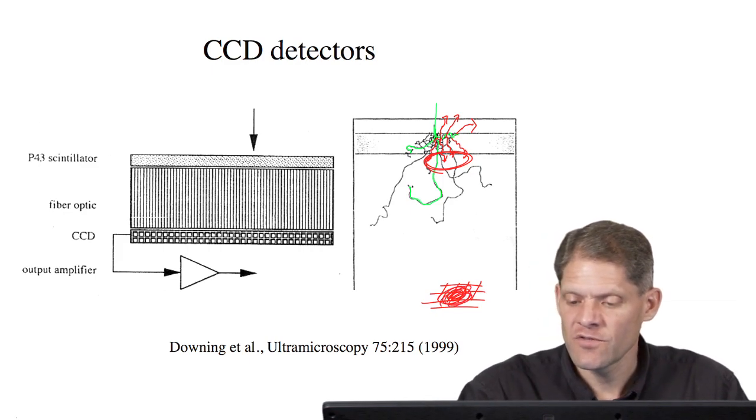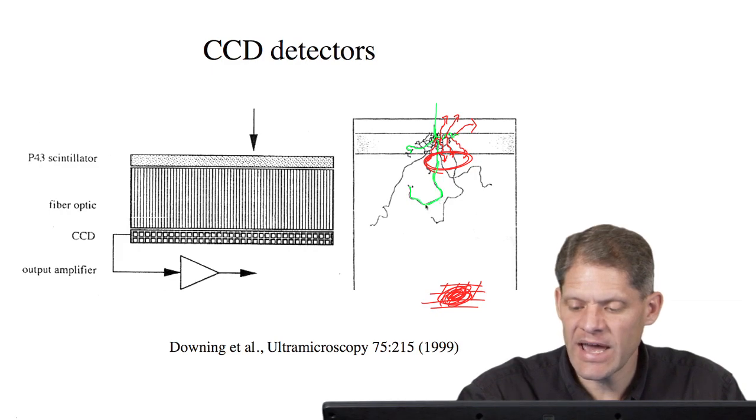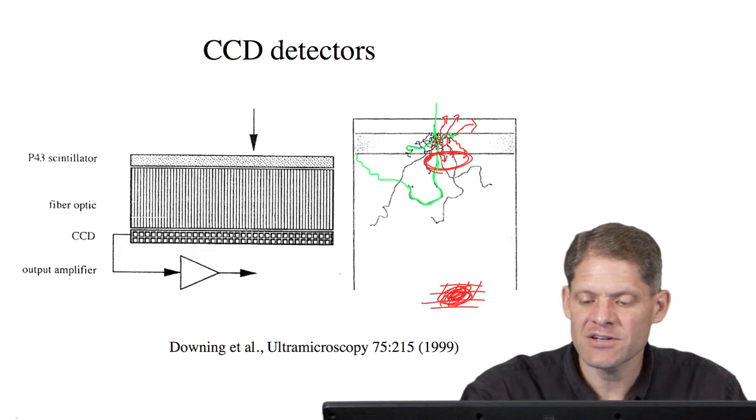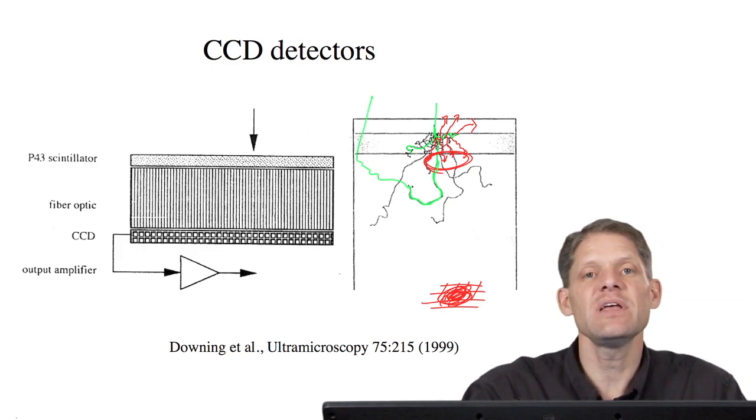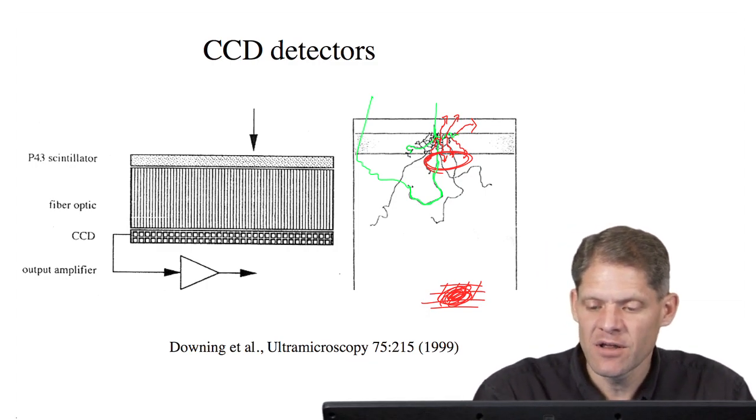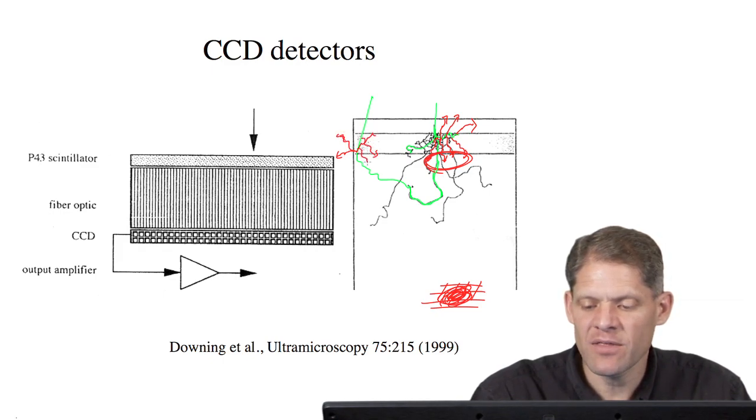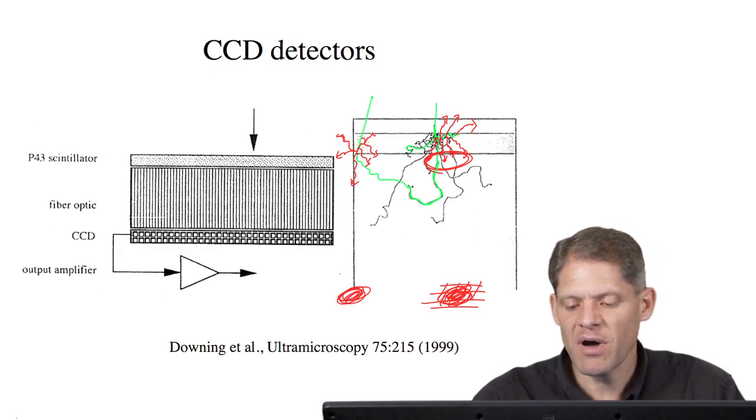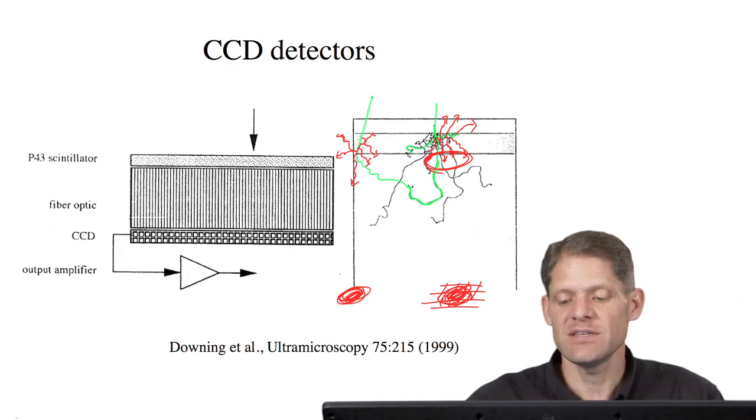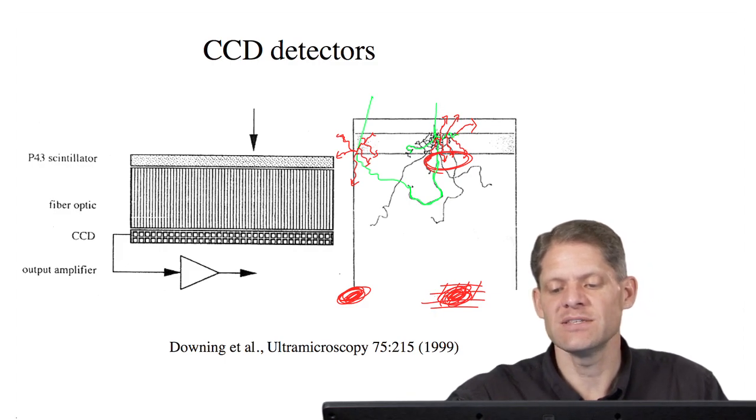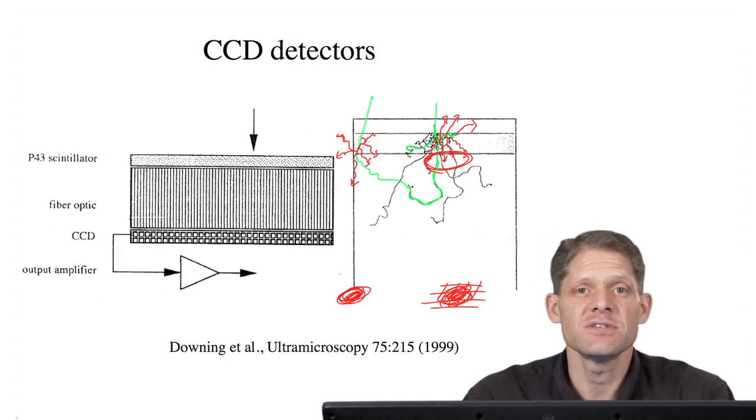Sometimes the incoming electron is scattered not only in this vicinity, but it can scatter and actually come back up through the scintillator in a completely unrelated position. As it passes through the scintillator, more photons will be produced along its path as well. As a result, you'll get two spots of counts on your CCD detector in two completely different positions, all from one incident electron. This contributes to noise in the images.